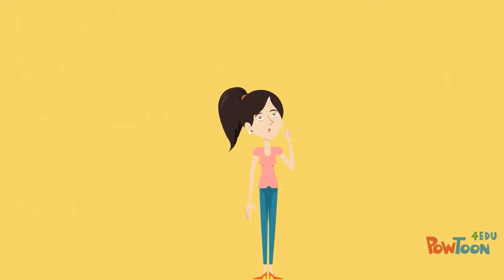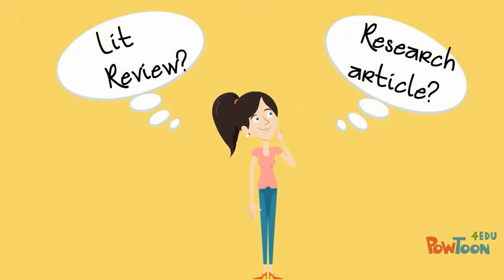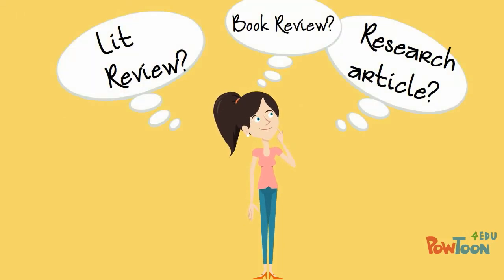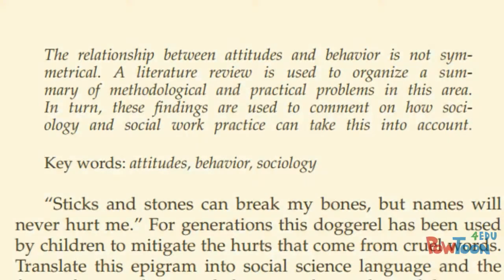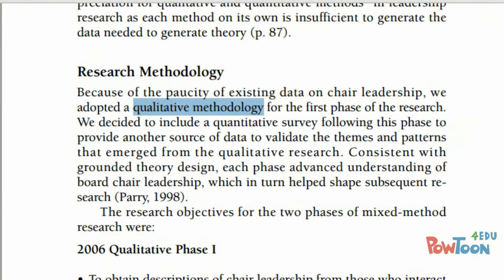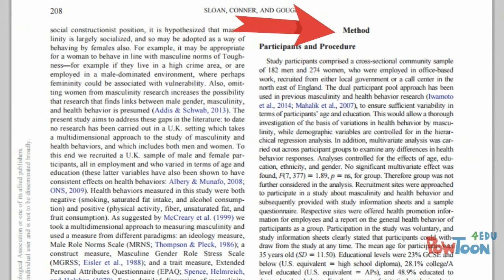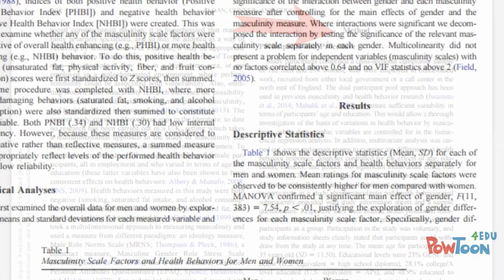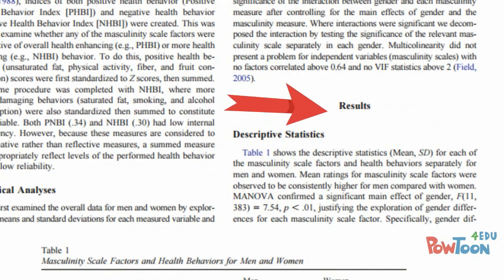At first, Mary had difficulty determining the type of article she had found. However, she learned to carefully read the abstract for the article, as this often described the type of article she had discovered. She also realized that research articles often have specific formats, with clearly labeled sections such as methods, results, and discussion.